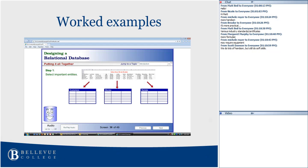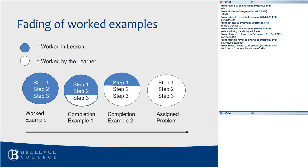Worked examples are when a student learns step-by-step how to perform a task or solve a problem. If you've ever sat through a lynda.com course on Photoshop, you've seen this model in action — through a webcast or screencast, you watch step-by-step as the instructor works through examples on how to crop a photo or change colors. In worked examples, fading is a way to gradually remove instructional guidance as the learner gains expertise.